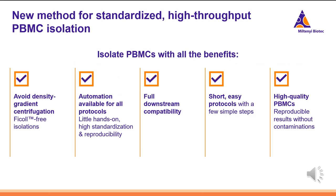To address these issues, we're introducing a new method of standardized high-throughput PBMC isolation that comes with all the benefits. You avoid density gradient centrifugation for completely Ficoll-free isolations. Automation is available for all protocols, so there are only a few hands-on steps. High standardization and reproducibility. The cells are compatible with any downstream application, and the protocols are short and easy with only a few simple steps. You get high-quality PBMCs and reproducible results without contaminations.